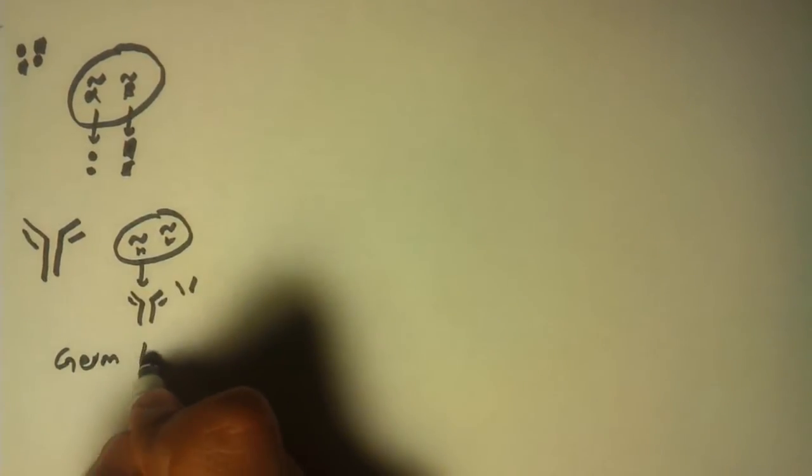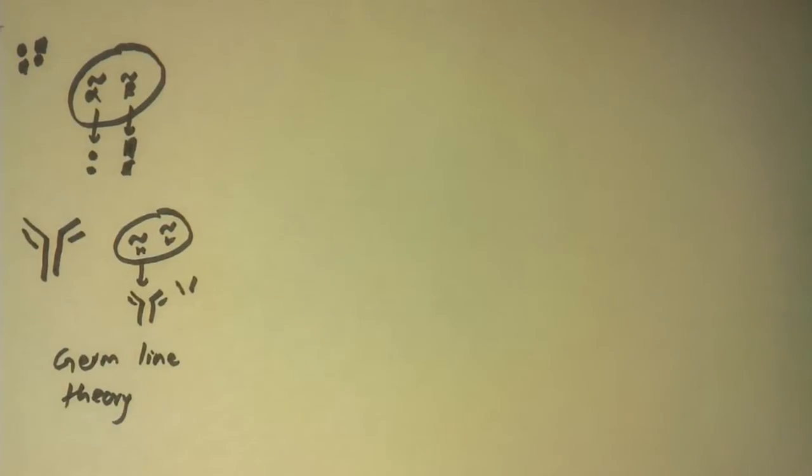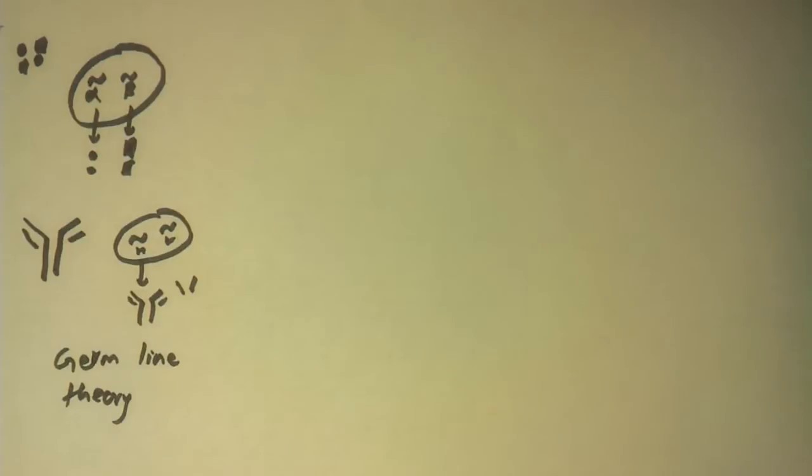This is called germline theory, and this used to be one of the theories to account for how antibodies are produced. This is not correct, and we'll see after some time why this is not correct and how this actually happens.